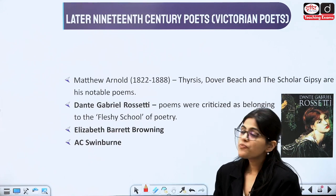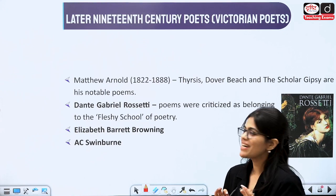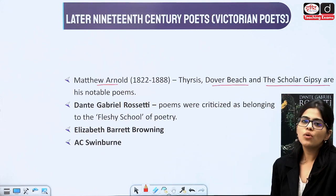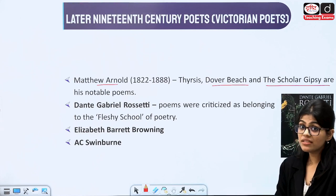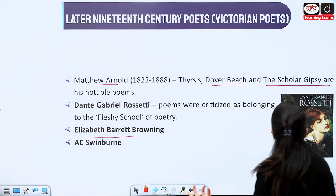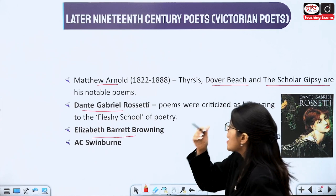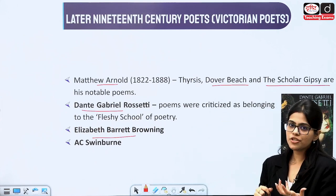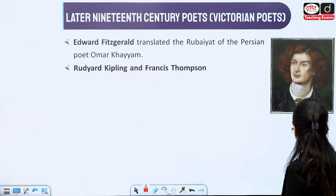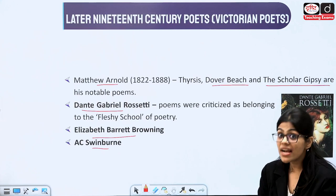Then we will study Matthew Arnold — not mentioning him when talking about the Victorian age would be a crime. He wrote works like Dover Beach and The Scholar Gypsy, and many other notable poems and works. We have Elizabeth Barrett Browning — who married Robert Browning. We will study Dante Gabriel Rossetti, who was criticized for belonging to the Fleshy School of Poetry. A.C. Swinburne was also writing, and there is a magazine called The Germ associated with Dante Gabriel Rossetti. We will study about magazines too — very important.